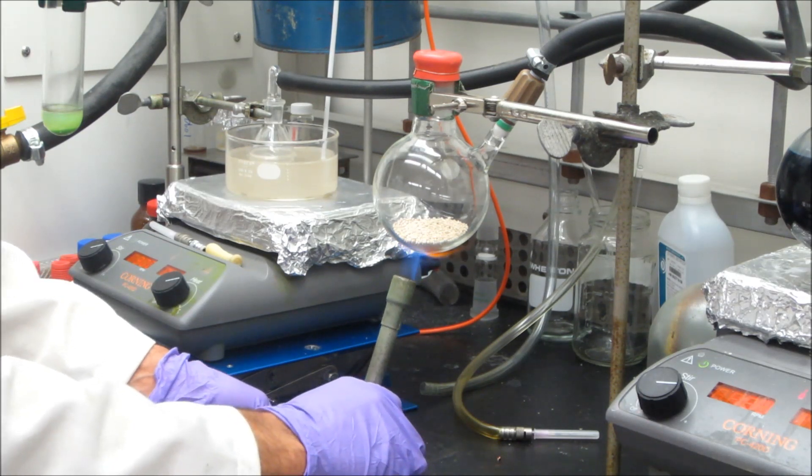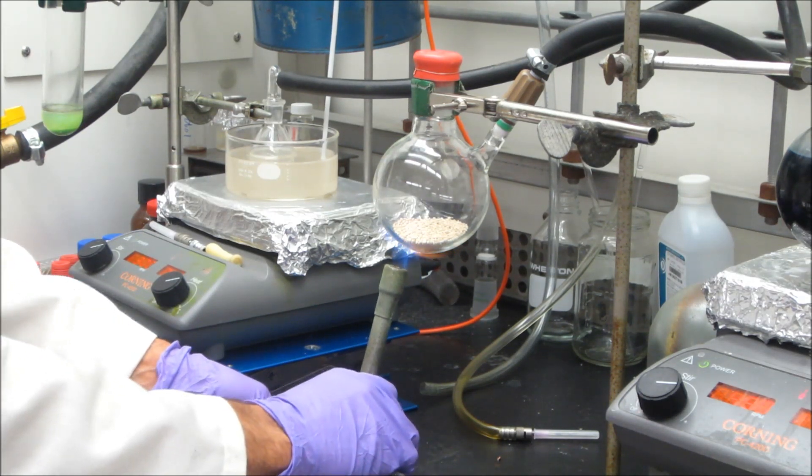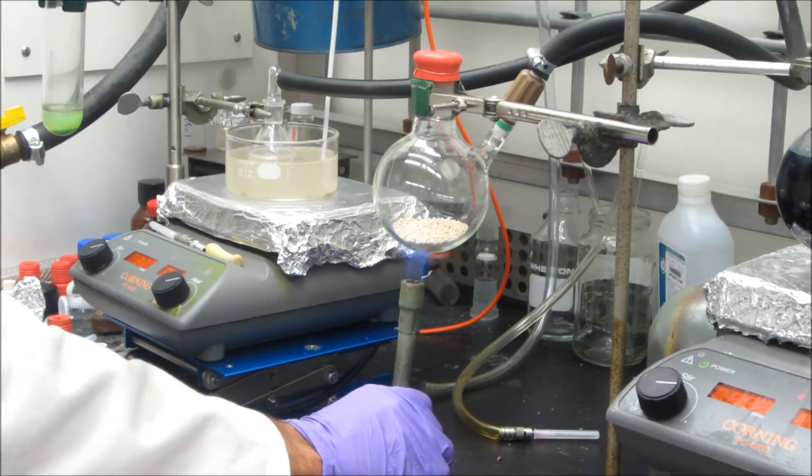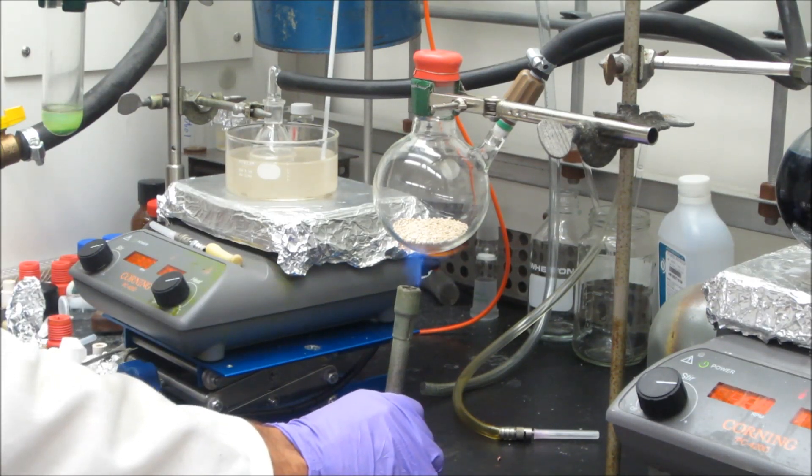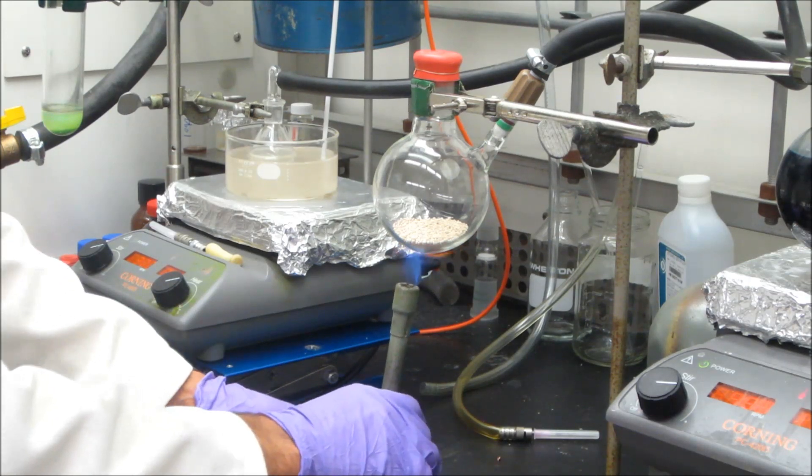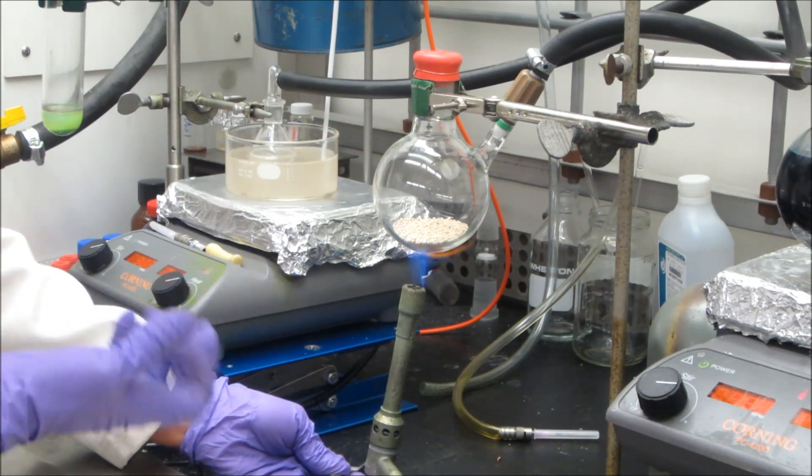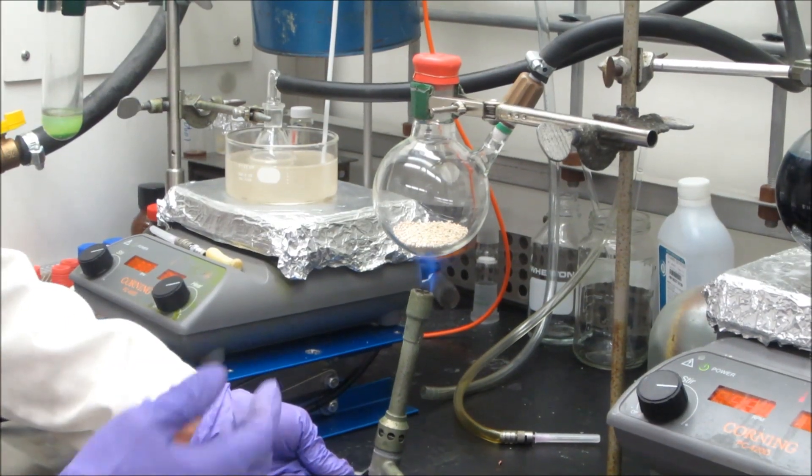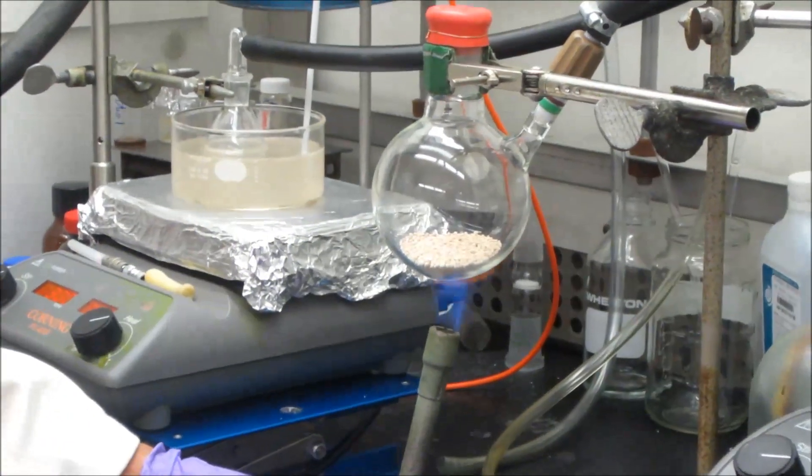So the flask is under nitrogen, not under vacuum right now. Correct. You don't ever want to heat a flask with a Bunsen burner while it's under vacuum because that could lead to a dangerous situation. The flame basically heats the glass, it weakens it, and if you've got it under vacuum, you could have an implosion or the glass itself will get deformed.